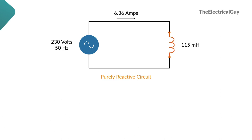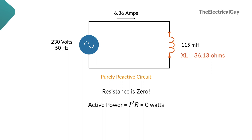Now consider another circuit with a 230-volt, 50 Hz supply, but instead of resistance we have connected a reactor of 115 millihenry. First we calculate the inductive reactance using the formula 2πfL, which gives XL equal to 36.13 ohms. The current is 6.36 amps. In a purely reactive circuit, resistance is 0, so active power is 0. However, the reactive power calculates to 1461 VAR, or 1.46 kVAR. So in a purely reactive circuit, active power is 0 but reactive power is maximum.